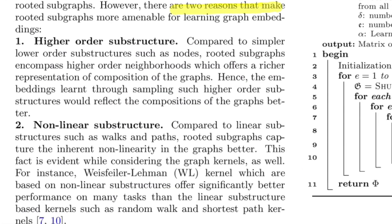The authors give two reasons for using rooted subgraphs rather than nodes, random walks, or shortest paths. The first is higher-order substructure: a rooted subgraph is a much better representation than considering nodes alone, because in a subgraph you also get edges and their neighborhoods, giving enriched structural and semantic representation. In NLP terms, if graph is sentence and node is word, then considering n-grams — combinations of nodes, which are subgraphs in this terminology — should give a better representation for the entire sentence than just individual words.